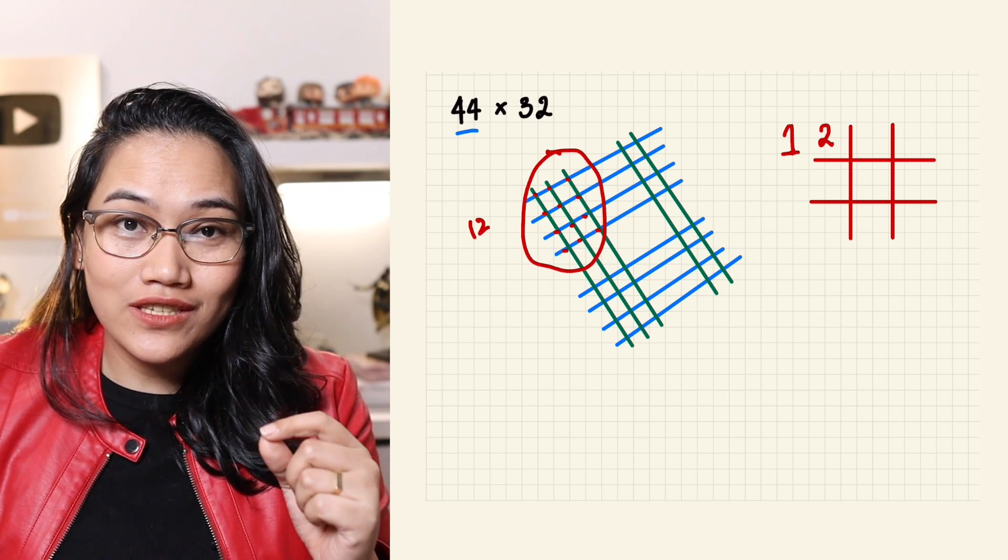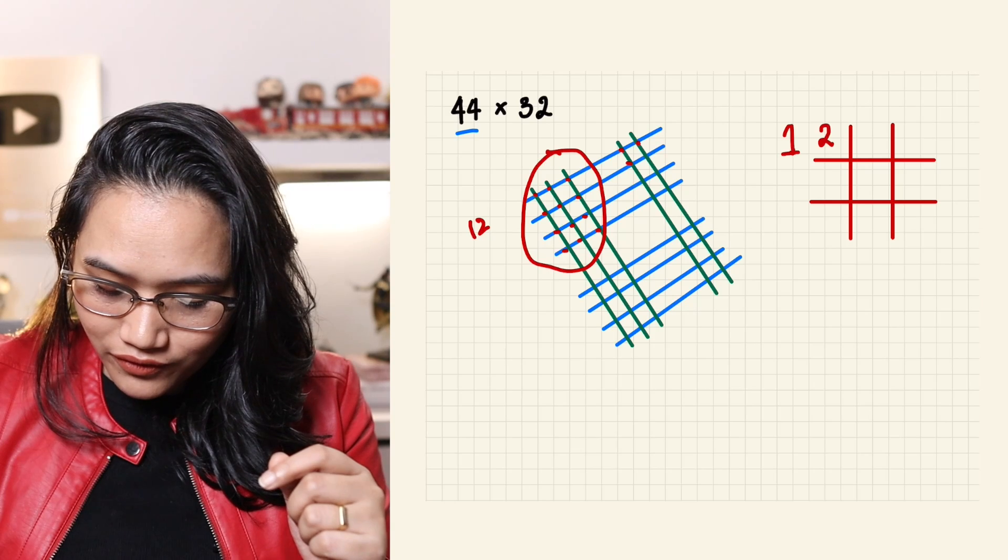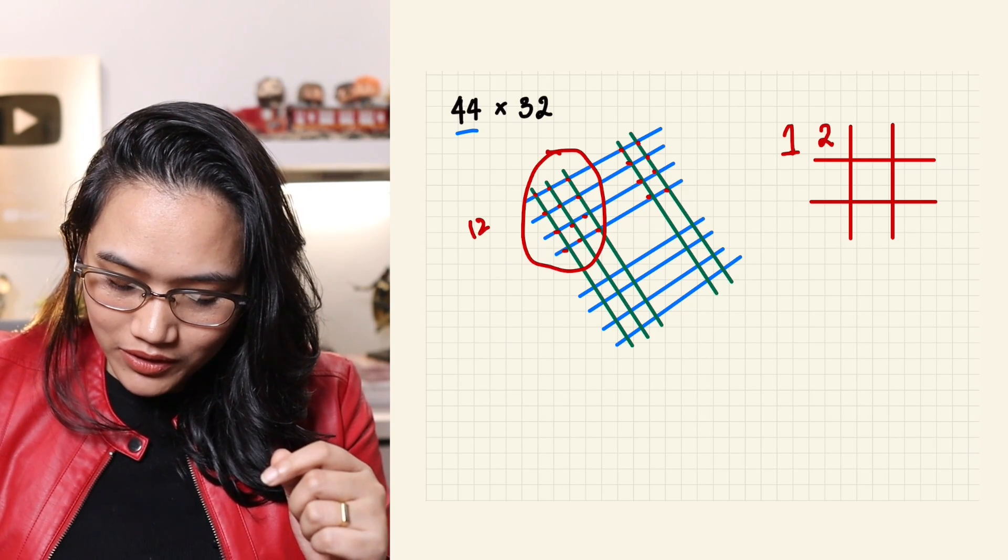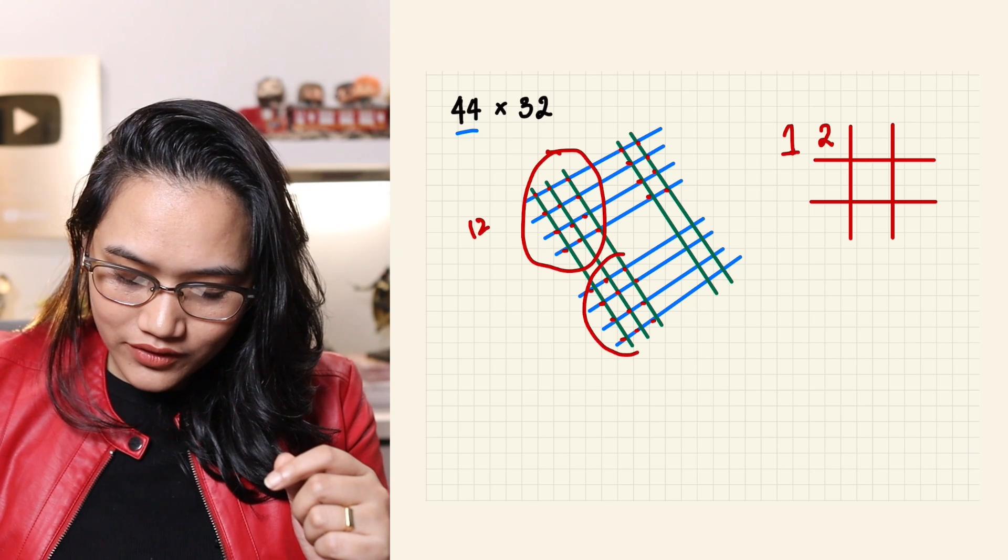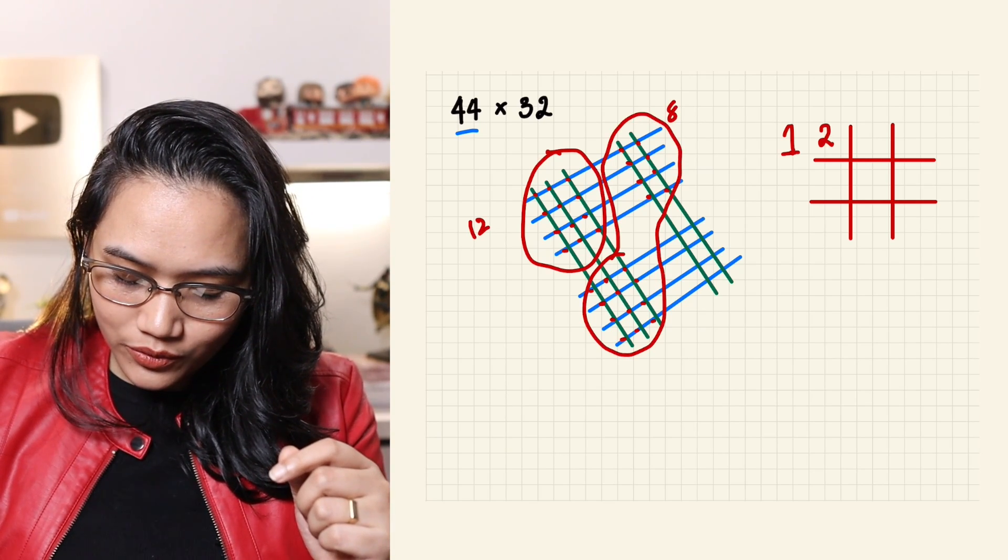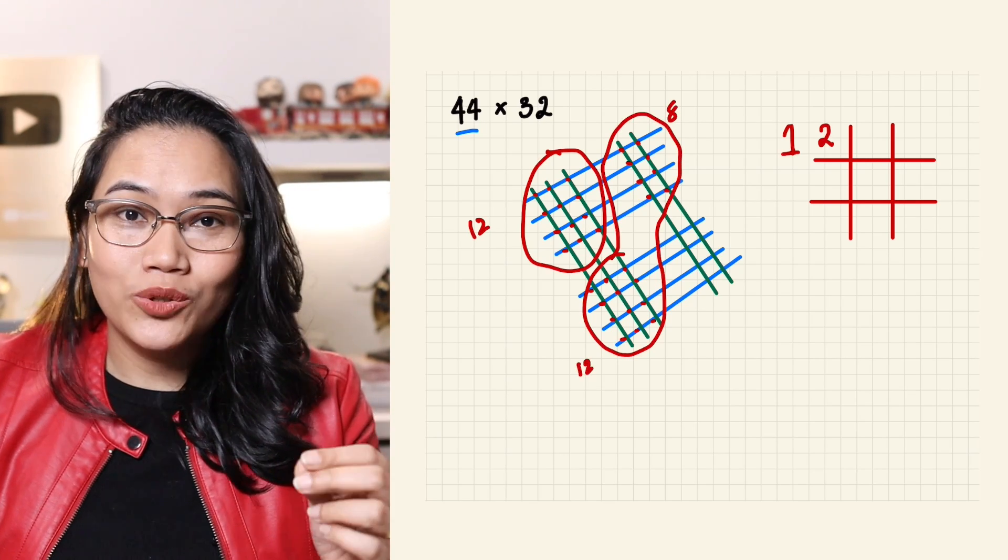The 2 should be aligned with the first digit of our final answer. Remember how we placed the 6 earlier? So, the 2 goes there, and we place the 1 here. Next, we're going to count the intersections in the middle part: 1, 2, 3, 4, 5, 6, 7, 8. Plus 1, 2, 3, 4, 5, 6, 7, 8, 9, 10, 11, 12. So, we have 8 plus 12 or 20.